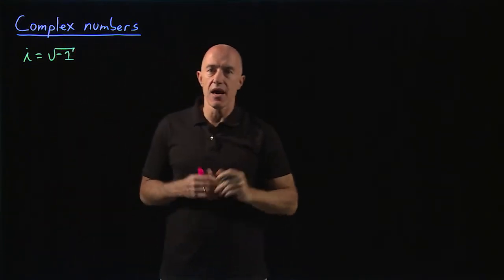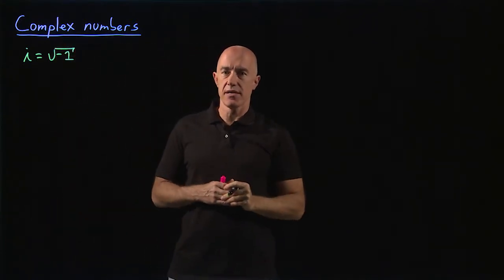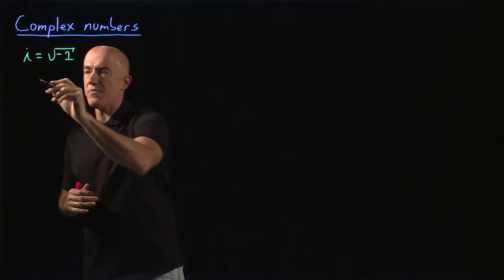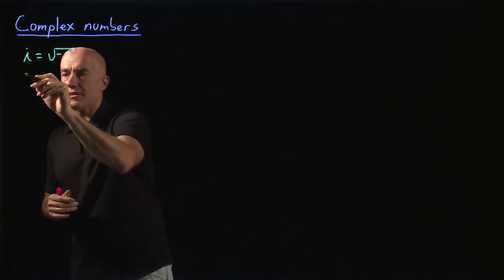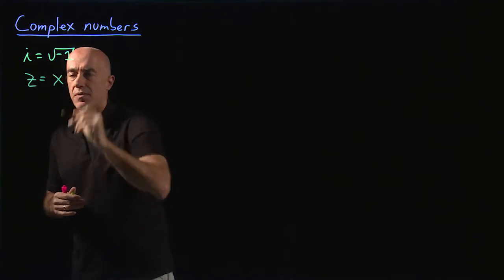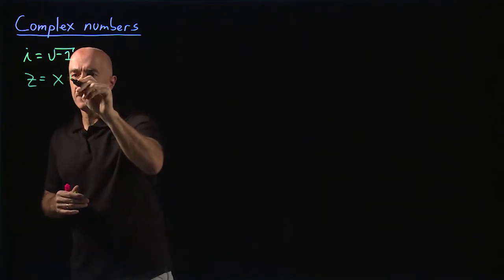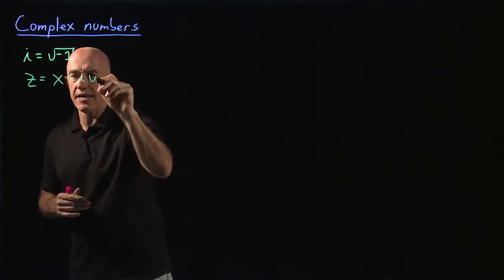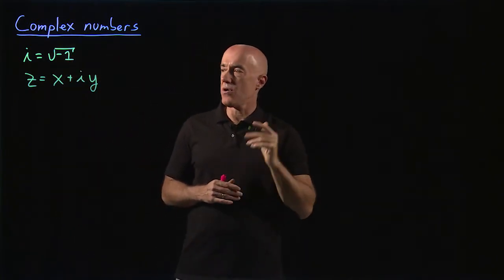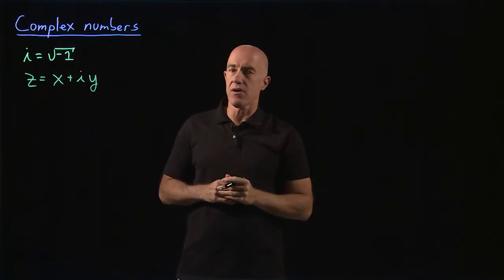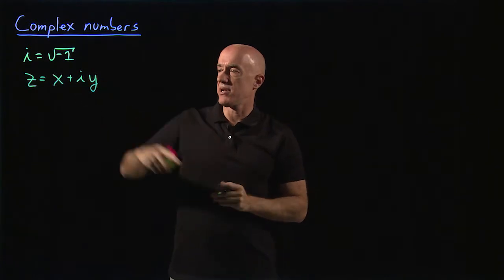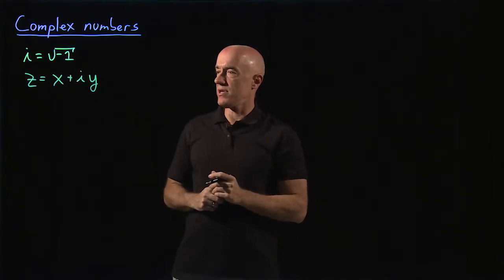That just means that i squared is equal to minus one. We represent a complex number z as a real number x plus i times a real number y. So x and y are real, and i is the imaginary unit.